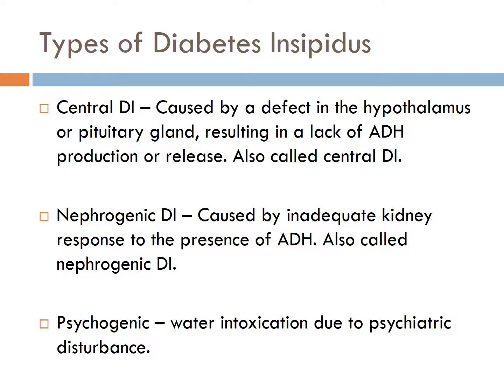Nephrogenic DI involves an inadequate renal response to ADH despite the presence of adequate ADH. This can be drug-induced, such as by lithium, or secondary to renal disease such as polycystic kidney disease or chronic renal insufficiency. It can also be secondary to hypercalcemia and hypokalemia, or disease of the renal tubules.